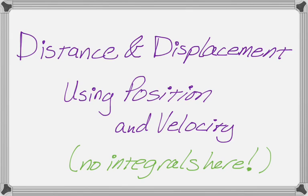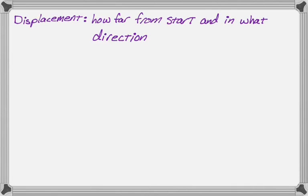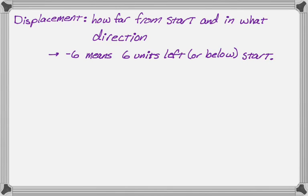So first we need to know what distance and displacement are. Let's start with displacement, because it's kind of the easier one to calculate. Displacement is just how far from the start you are. A particle will be moving left and right, or up and down — it'll have a starting point, and the displacement is just how far you are from that starting point at the end of the journey, and in what direction. So you could be to the left or to the right. For example, a displacement of negative six means that you are six units to the left or below the starting point. Displacements have a magnitude and a direction, which means they're really a vector quantity, but we don't need to worry about that at the beginning of calculus.